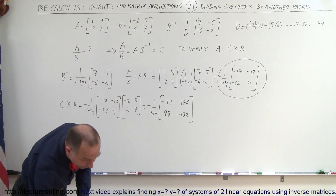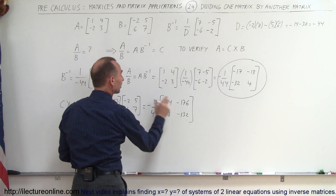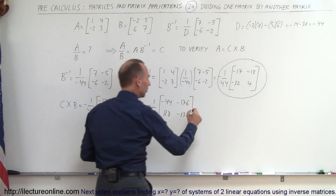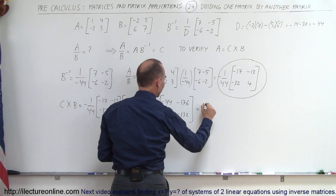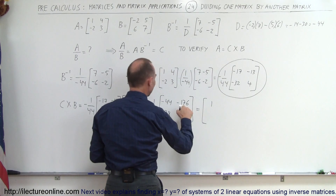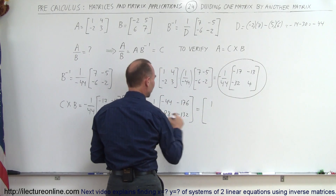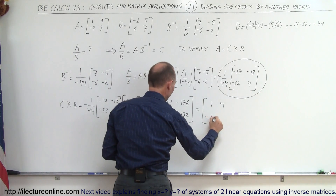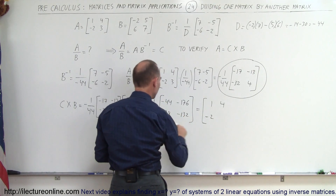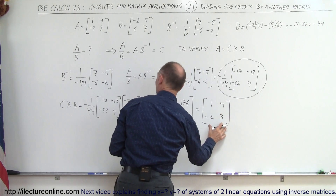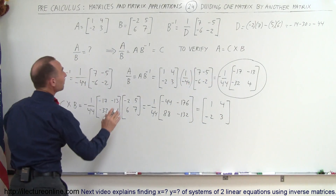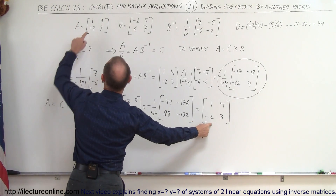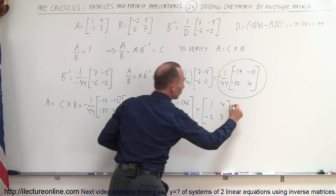Now we simplify by multiplying negative 1 over 44 by each element. 44 divided by negative 44 is negative 1 — wait, minus 44 times minus 1 over 44 gives 1. Negative 176 divided by negative 44 is positive 4. 88 divided by negative 44 is negative 2. And negative 132 divided by negative 44 is positive 3. This gives us 1, 4, negative 2, 3 — which checks out as our original matrix A.